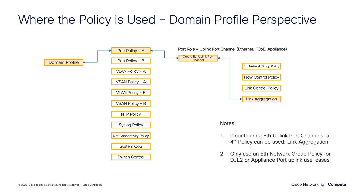Before we go to a short demo, let's see where this policy is used from a graphical standpoint and how it all ties together. You have your domain profile on the left, then one or more port policies — I like to create fabric-specific port policies, so you'll often see two. That's often based on whether you're uplinking vSANs or not. When you go to create the Ethernet uplink port channel — whether the port role is Ethernet uplink port channel, Fibre Channel over Ethernet port role, or appliance port channel — you'll have access to the link aggregation policy. Note that you won't see it on fibre channel port channels.